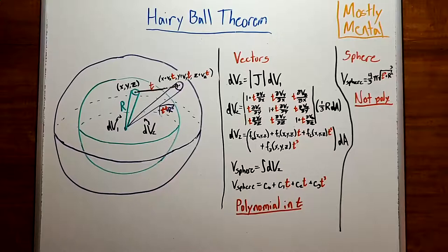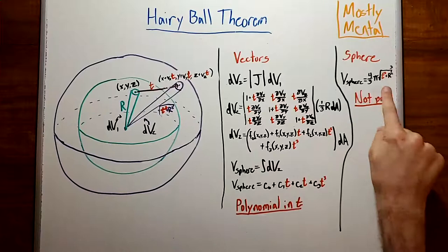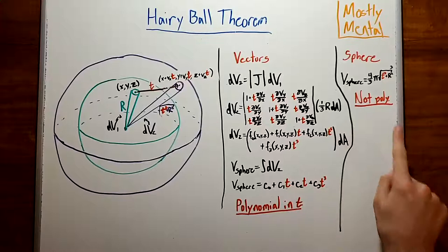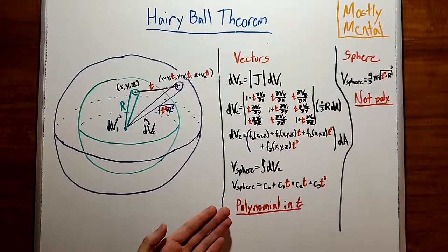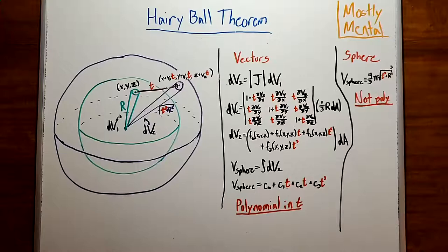But remember, this is a sphere. We know the radius. It's the square root of t squared plus r squared. So the volume is just 4 thirds pi times that cubed. And that is not a polynomial. So the vectors tell us that the volume is a polynomial in t, and the sphere tells us it isn't. That is a contradiction. So our assumption that there were no normal vectors can't be true. And therefore, there must be a normal vector somewhere. That is the hairy ball theorem.